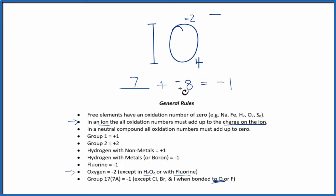So 7 plus minus 8, that gives us a minus 1. That means the oxidation number on the iodine is plus 7.